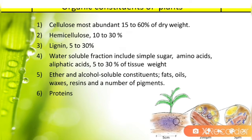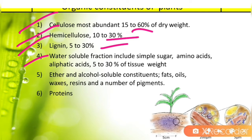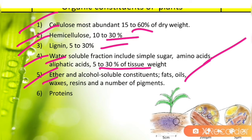The first constituent is cellulose, the most abundant, about 15 to 60 percent of dry weight. Hemicellulose is 10 to 30 percent. Lignin is 5 to 30 percent. The water-soluble fraction includes simple sugars, amino acids, and aliphatic acids — 5 to 30 percent of tissue weight. Fifth are ether and alcohol soluble constituents: fats, oils, waxes, resins, and pigments. Sixth are proteins. These are the six main plant constituents involved in decomposition.